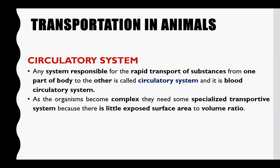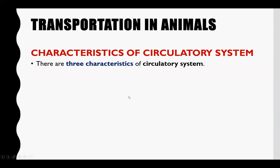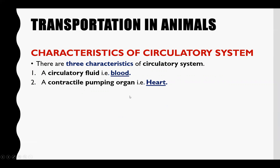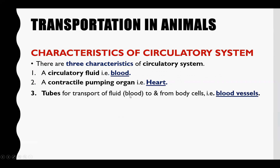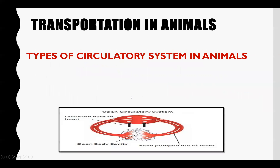Now we will discuss the circulatory system, because complex organisms require one. Their body is complex and dense, and the surface area to volume ratio is small. The characteristics of a circulatory system are: the circulatory fluid is called blood; there is a contractile pumping organ called the heart; and there are tubes called blood vessels, which we differentiate into arteries, capillaries, and veins.